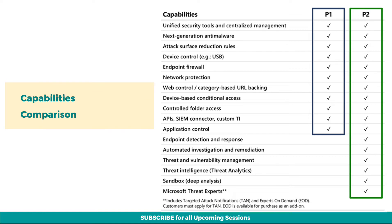Advanced hunting, part of the EDR capability, provides a query-based threat hunting tool that lets you proactively find breaches and create custom detections. This is also available in Plan 2 only.